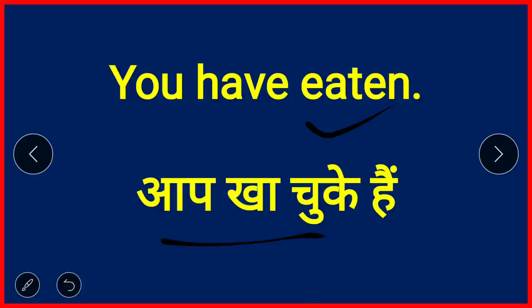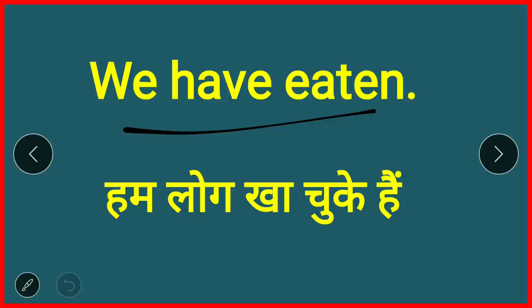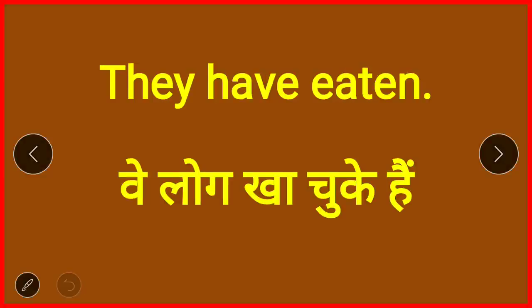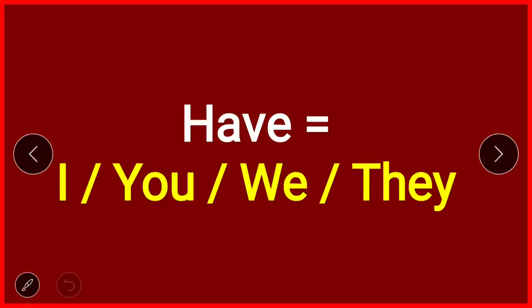More examples: 'You have eaten' — aap kha chuke hain. 'We have eaten' — hum log kha chuke hain. 'They have eaten' — ve log kha chuke hain / unlogon ne kha liya hai. Remember: have is used only with I, you, we, and they — set this in your mind.